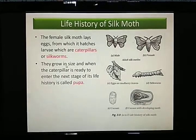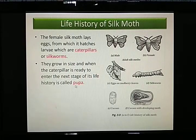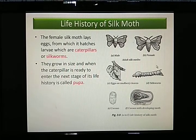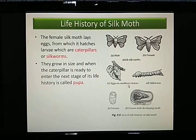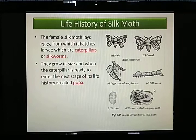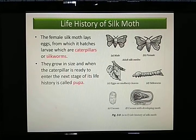The caterpillar grows in size, and when it is ready to enter the next stage of its life history, that stage is called the pupa. After hatching into a silkworm, it goes through a period of life and then develops into a pupa, although the pupa is not shown in the diagram.